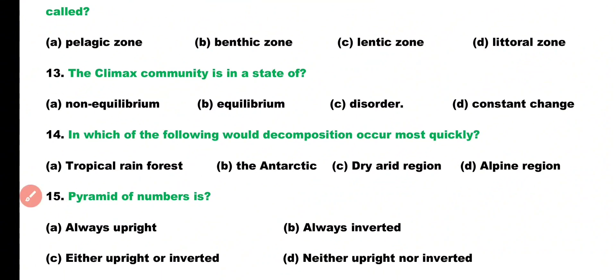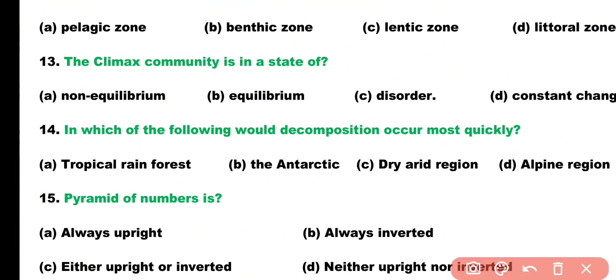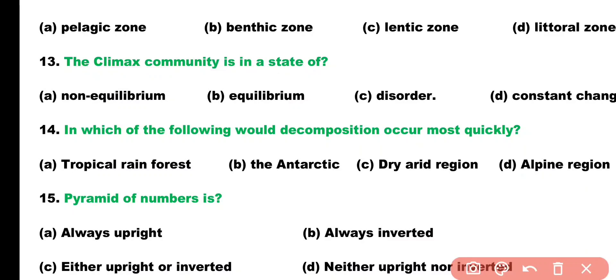Question number thirteen. The climax community in an ecosystem is in a state of: non-equilibrium, equilibrium, disorder, or constantly changing? Correct answer is option B. The climax community is always in a state of equilibrium.